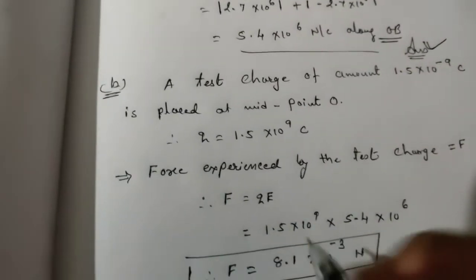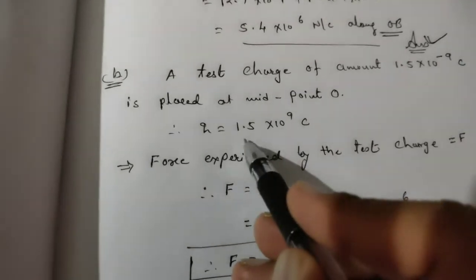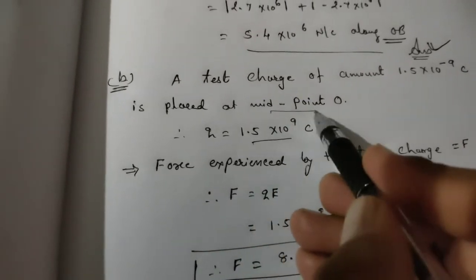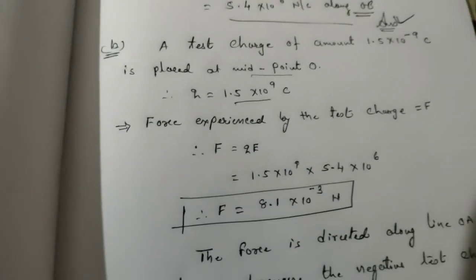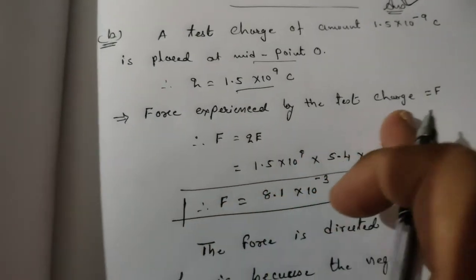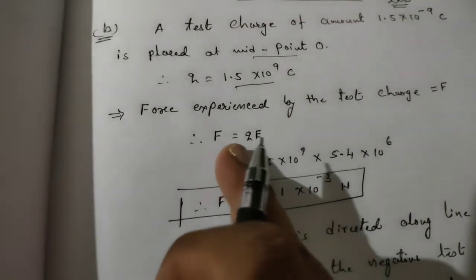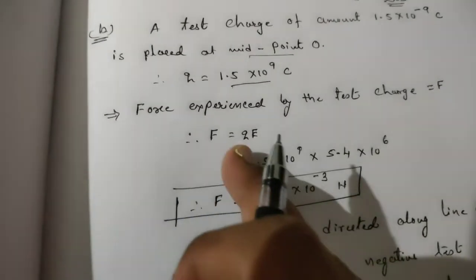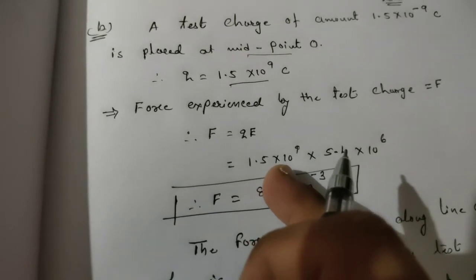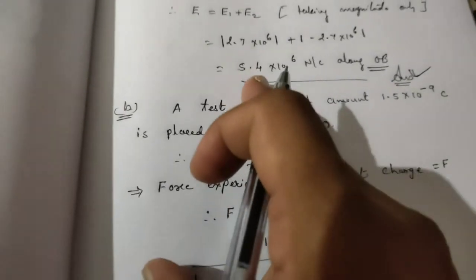Force experienced by the test charge is F = QE. Q = 1.5 × 10⁻⁹ coulomb and E we already found at midpoint O. Just calculate - that's your homework for calculation.